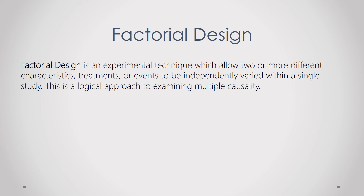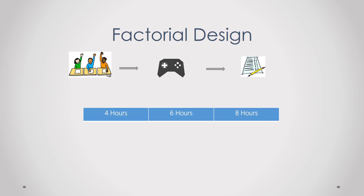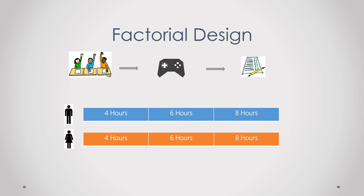Factorial design is an experimental technique that allows two or more different characteristics, treatments, or events to be independently varied within a single study. It is a logical approach to examining multiple causality. In the computer games example, a factorial design could also assess how different durations of play — for example, four, six, or eight hours — affect proficiency, and could include gender as a variable, resulting in six experimental conditions: two conditions each for four, six, and eight hours, for both male and female participants.